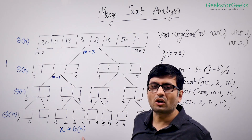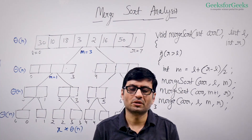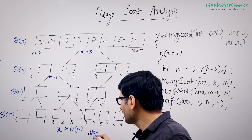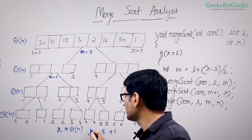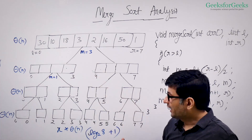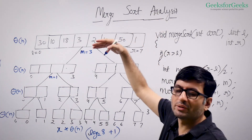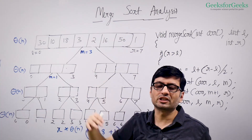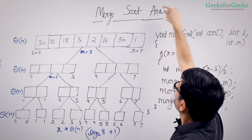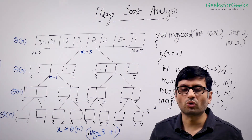What is X — how many levels do we have in this recursion? X is equal to theta(log N). If you see this example where N is 8, you have log base 2 of 8 plus 1 levels — that is 3 plus 1, which is 4 levels. If you take N equal to 16, you will have one more level. So if you multiply N by 2, the number of levels increases by one — that's why we have the log N factor. It's growing logarithmically.